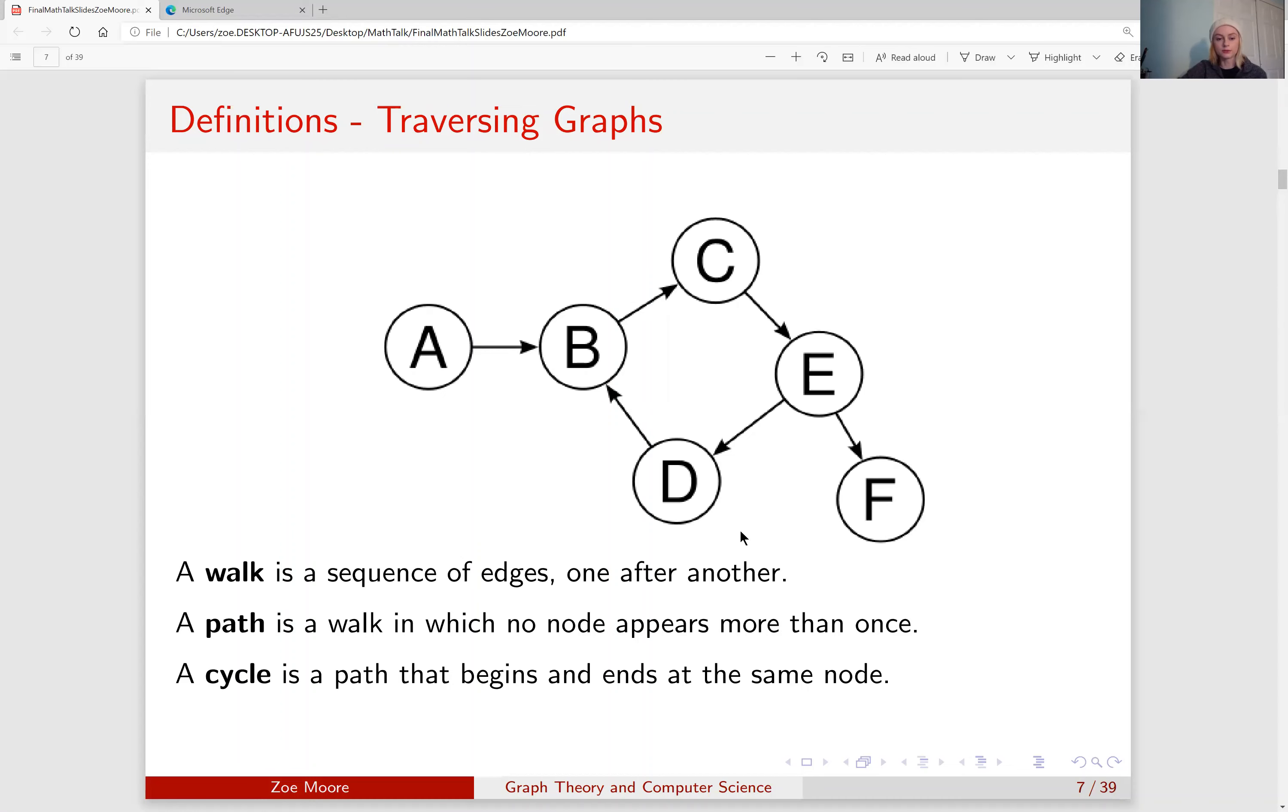Now traversing a graph. A walk is a sequence of edges one after the other. A path is a walk in which no node appears more than once. So an example path would be A to B and then B to C. And a cycle is a path that begins and ends at the same node. So this could be B to C, C to E, E to D, and D to B.